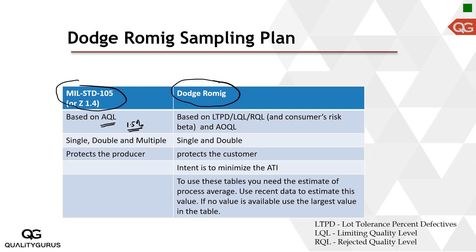One set of tables is based on LQL, LTPD, or RQL — these are all the same thing. We have used RQL as rejectable quality limit in the basics, and discussed LTPD as lot tolerance percent defective. LQL stands for limiting quality level. All three terms mean the same thing, and one set of tables is based on this.